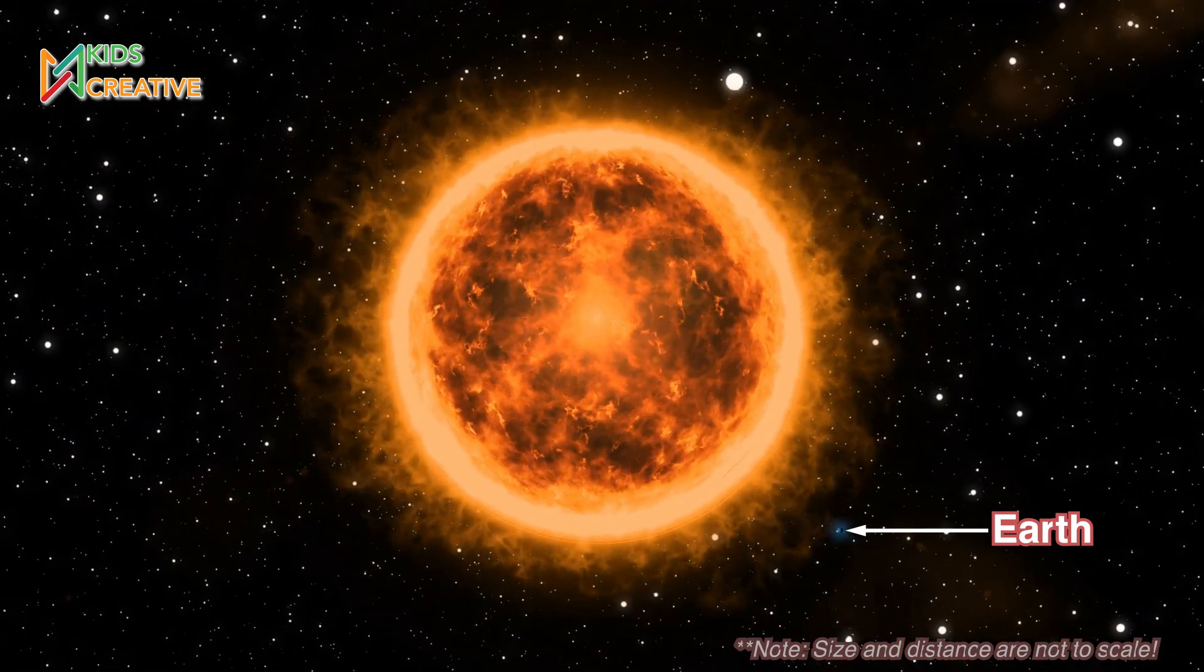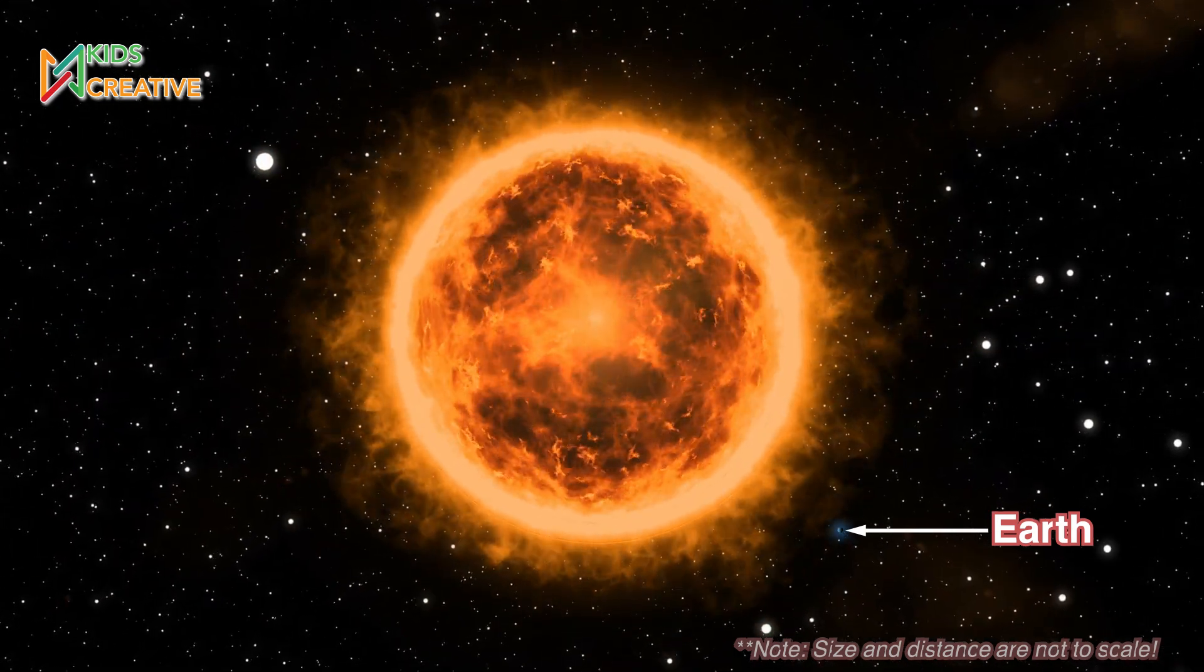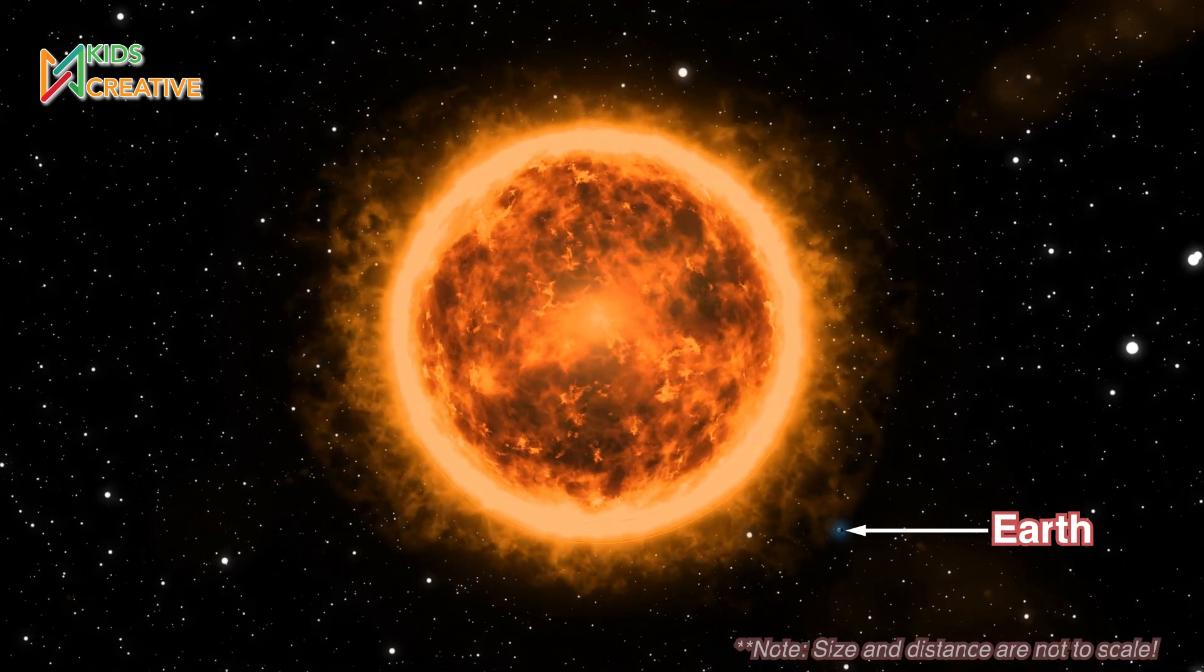Most of the stars you see at night are much farther away than the sun. That's why they look like tiny dots.